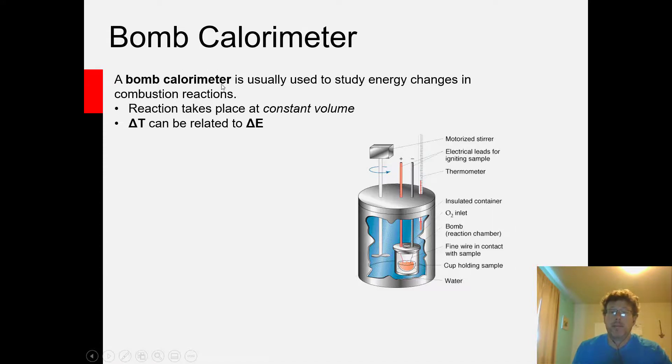A bomb calorimeter is a special type of calorimeter that's used to study energy changes in combustion reactions. The key is that the bomb calorimeter is designed so the reaction can take place at constant volume, and if your reaction is taking place at constant volume, gases that may be evolved in the reaction can't do any expansion work.